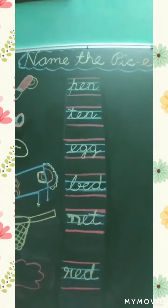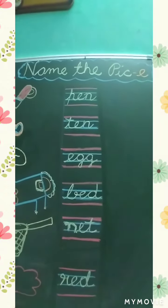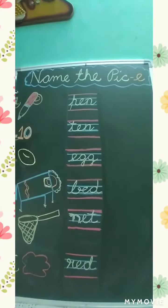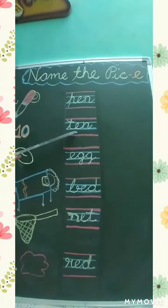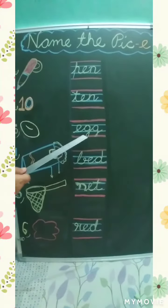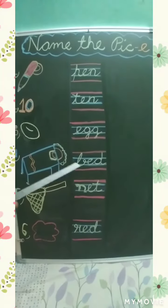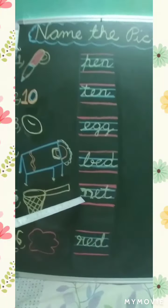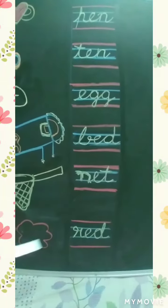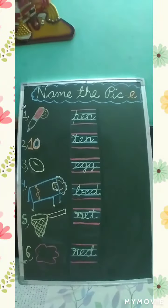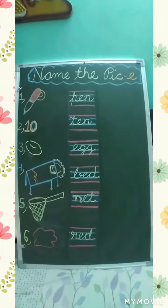So these are pictures of sound E. Number one: P, E, N — pen. Next: E, double G — egg. Number four: B, E, D — bed. Number five: N, E, T — net. Number six: R, E, D — red. So, thank you. Have a nice day.